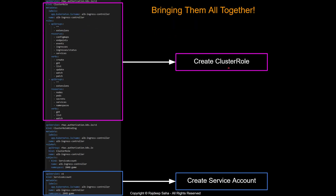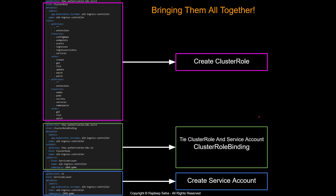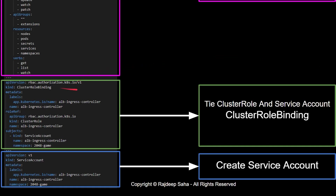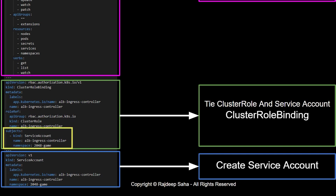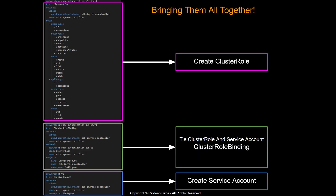So at this point we have the cluster role and we have a service account — so how do you associate them? Here comes cluster role binding. The kind is cluster role binding, and in role ref it references the cluster role named ALB ingress controller. On the subject, it ties the service account ALB ingress controller in the namespace 2048-game. As you can see, the cluster role is reusable — if you have another namespace with an nginx web server and you create a service account there, you can associate the same cluster role to that service account as well.